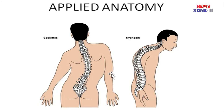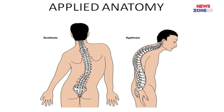The deformities of the vertebral column include: scoliosis, which is lateral bending of the vertebral column; kyphosis, where there is more dorsal convexity; and lordosis, where the lordotic curvature is accentuated.